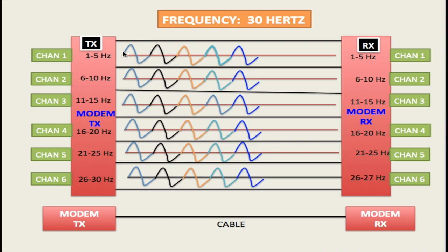Think of it like a generator spinning — a generator which generates frequencies. It spins at one cycle per second for the first cycle. The second cycle it spins twice — 360 degrees twice — to generate the second cycle. Then the third rotation generates the third cycle, the fourth, and the fifth being the highest frequency within this channel. On channel 2 it goes from cycle 6 right up to cycle 10, with cycle 10 being the highest frequency within that channel. These frequencies keep getting higher within the first second, all within one second, going all the way up to 30 hertz — the number of rotations per second. So we're sending 30 hertz, which is 30 cycles per second.